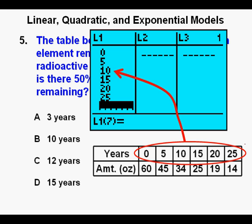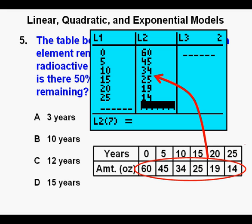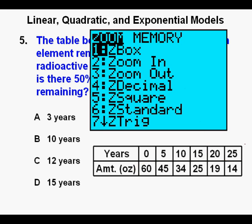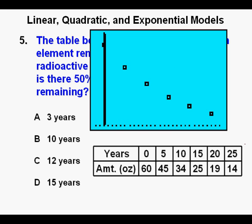Enter the independent values, the years, under L1. Then enter the dependent values, the amounts, under L2. From here, we'll look at the points by pressing ZOOM and scroll down to 9, ZOOM STAT, press ENTER. We see the points.